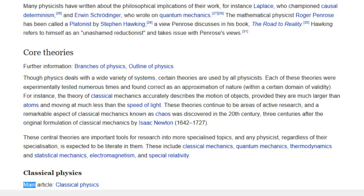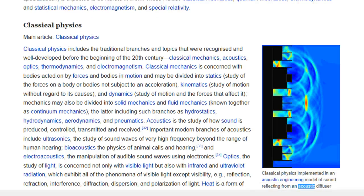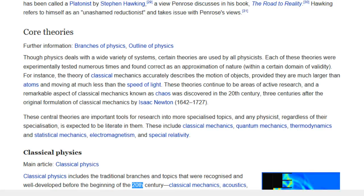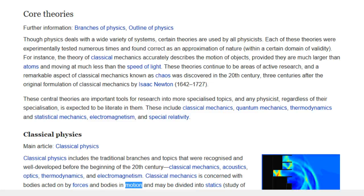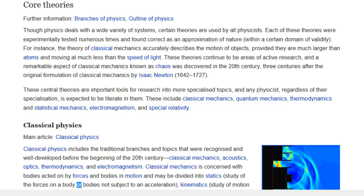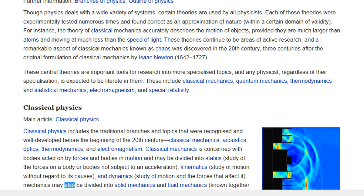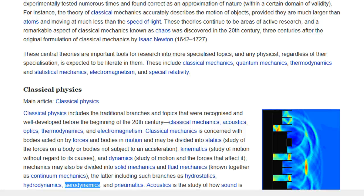Classical physics. Main article, Classical physics. Classical physics implemented in an acoustic engineering model of sound reflecting from an acoustic diffuser. Classical physics includes the traditional branches and topics that were recognized and well developed before the beginning of the 20th century: classical mechanics, acoustics, thermodynamics, and electromagnetism. Classical mechanics is concerned with bodies acted on by forces and bodies in motion and may be divided into statics, study of the forces on a body or bodies not subject to an acceleration; kinematics, study of motion without regard to its causes; and dynamics, study of motion and the forces that affect it. Mechanics may also be divided into solid mechanics and fluid mechanics, known together as continuum mechanics, the latter including such branches as hydrostatics, hydrodynamics, aerodynamics, and pneumatics.